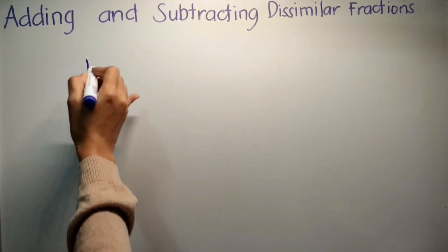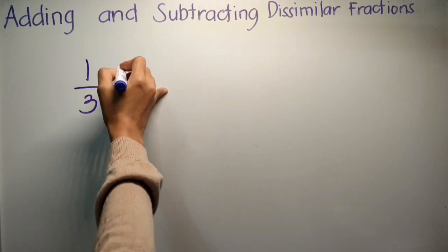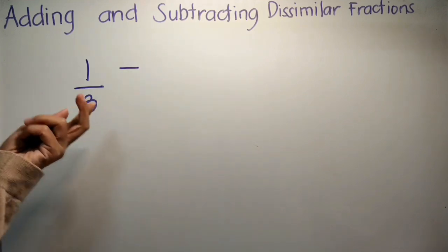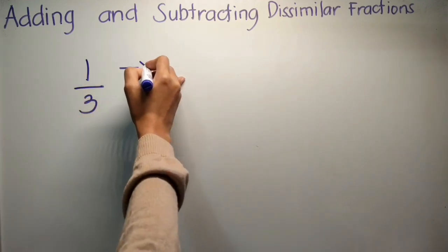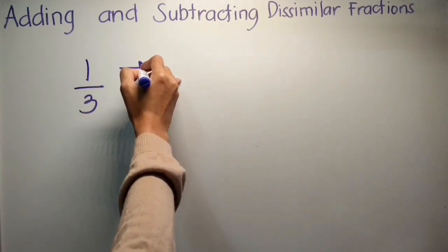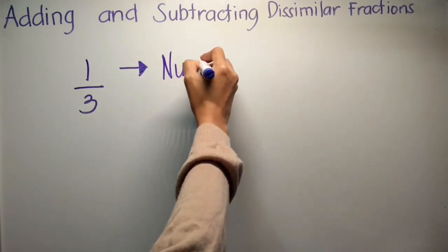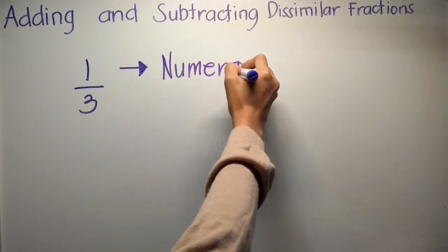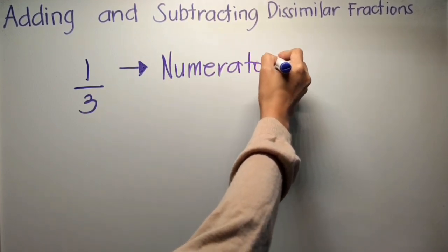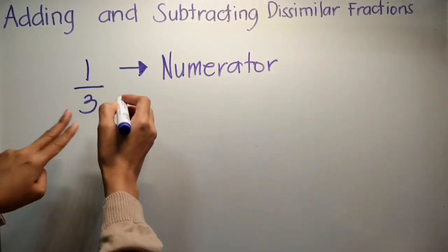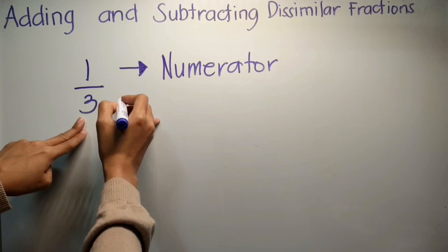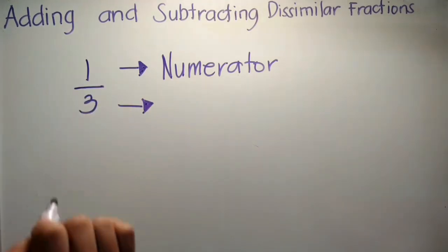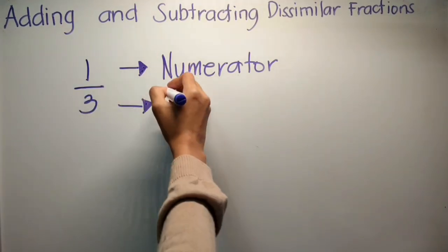Ang parts ng fraction — meron tayo ditong, ano yung tawag dito? Numerator. At ang sa baba? Denominator.